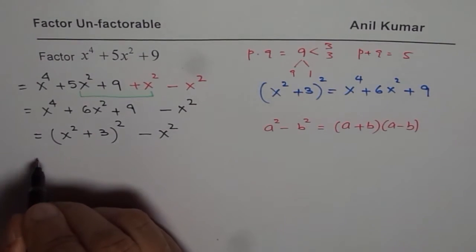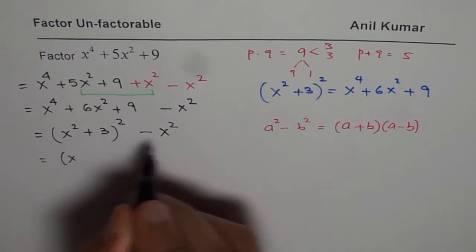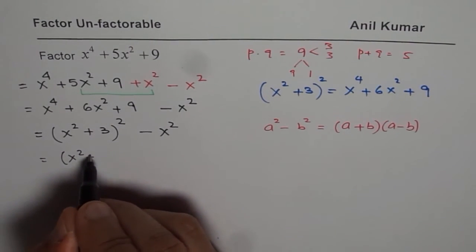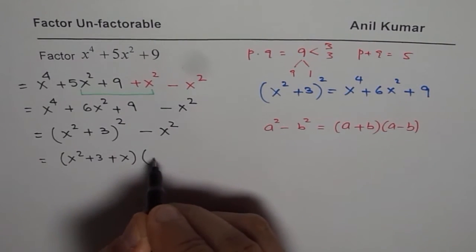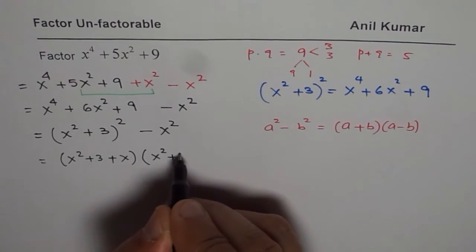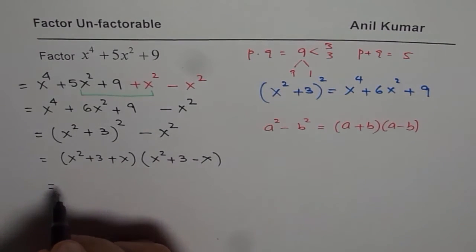So what we get here is x squared plus 3 is a for us, x squared plus 3 plus x, times x squared plus 3 minus x. So we have factored the unfactorable.